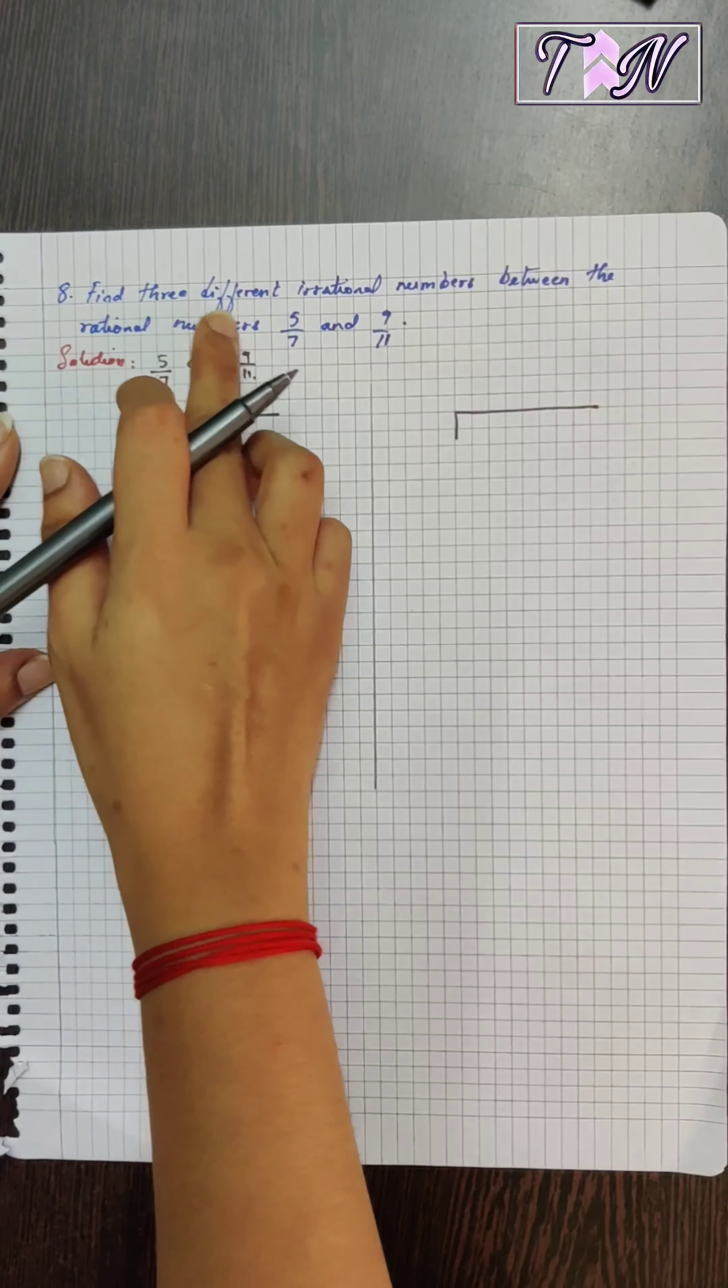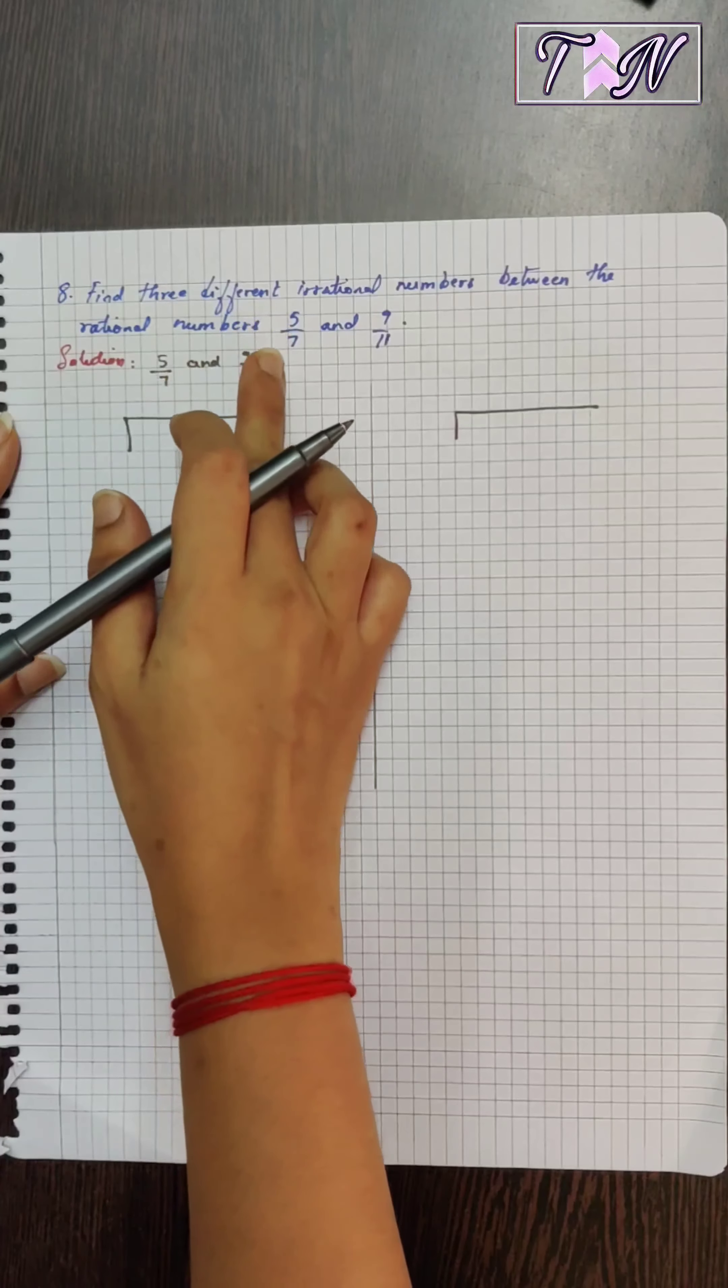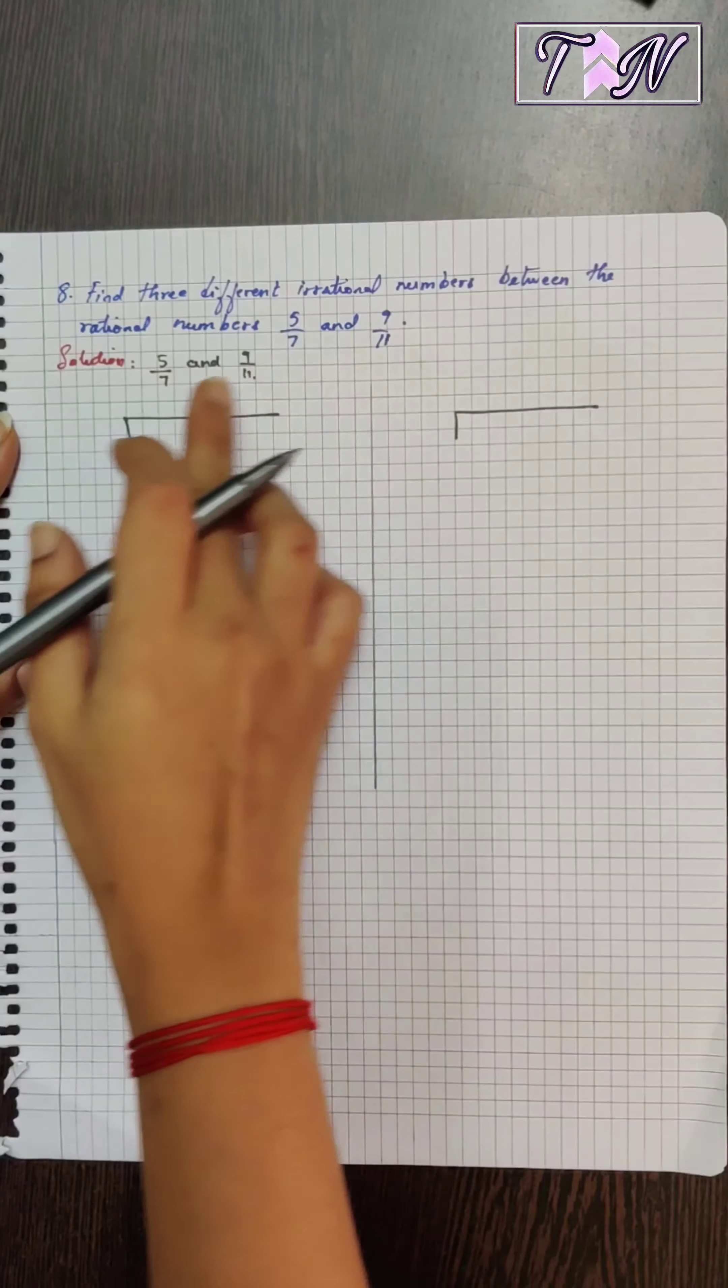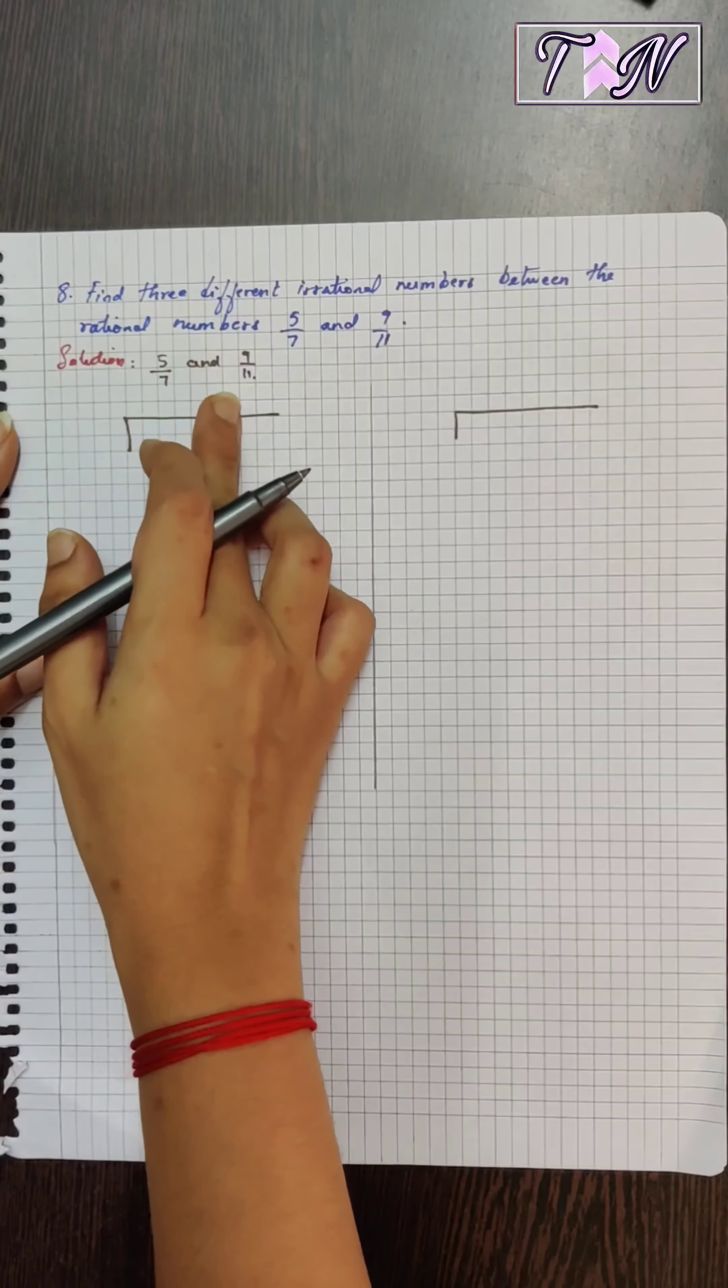Eighth sum: Find three different irrational numbers between the rational numbers 5 by 7 and 9 by 11. So we have to find three irrational numbers between 5 by 7 and 9 by 11.